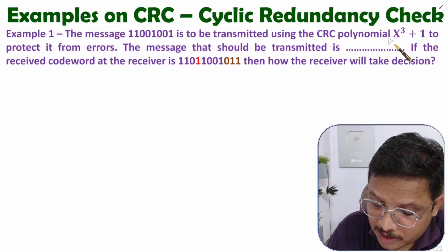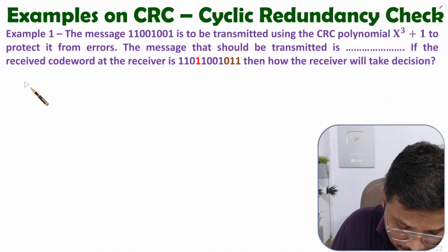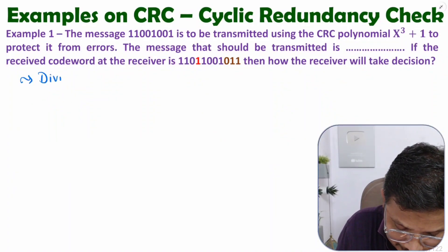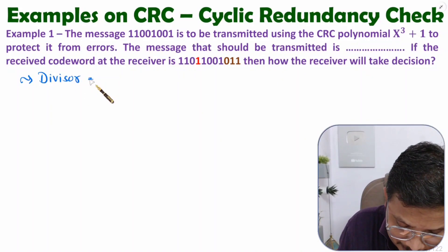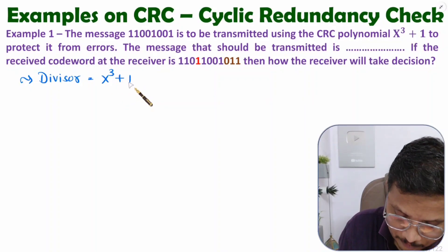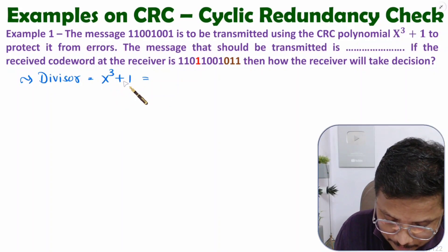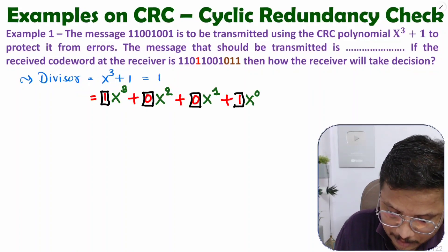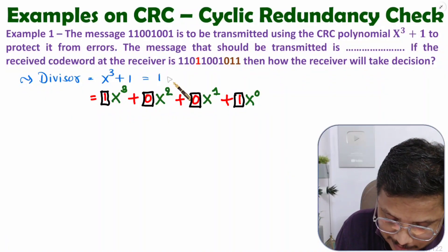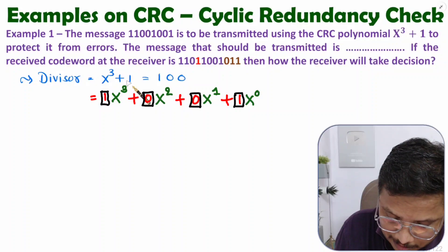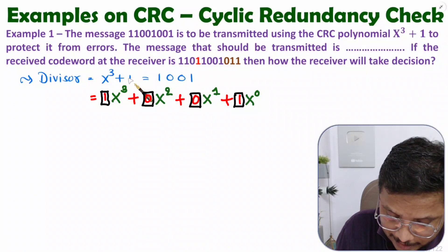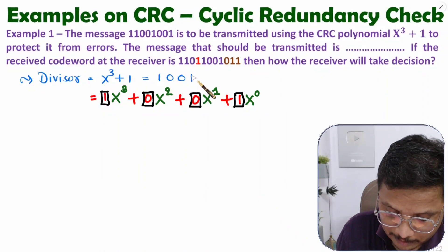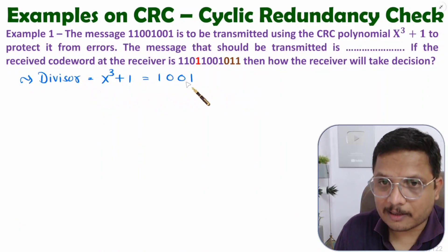First, you need to have the divisor based on this polynomial. The divisor is given in polynomial form as x³ + 1. We need to convert this to binary. x³ means write 1, x² is not given so write 0, x¹ is not given so write 0, and 1·x⁰ means write 1. So the divisor in binary is 1001.